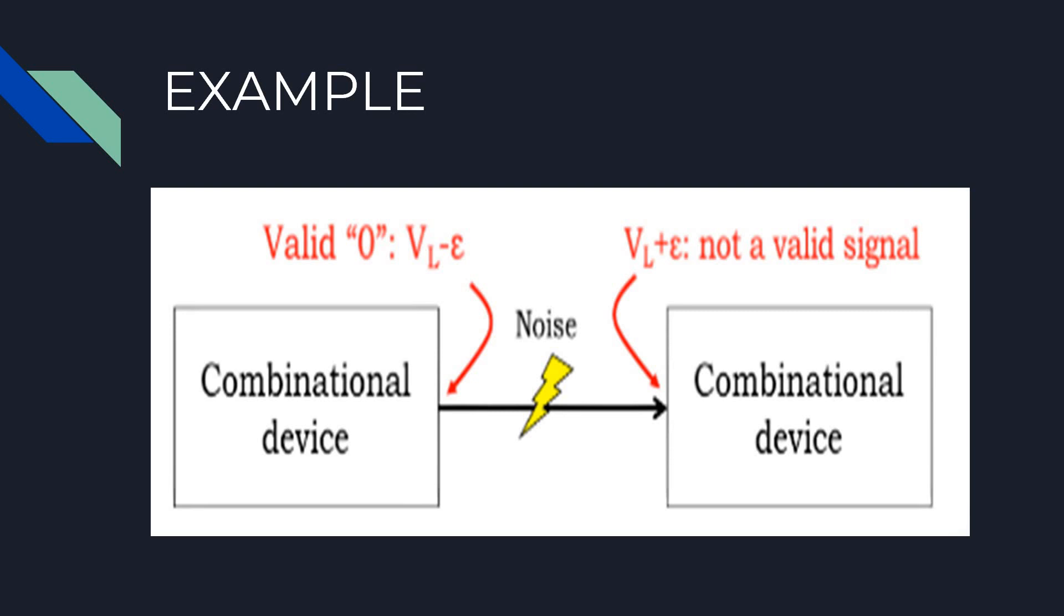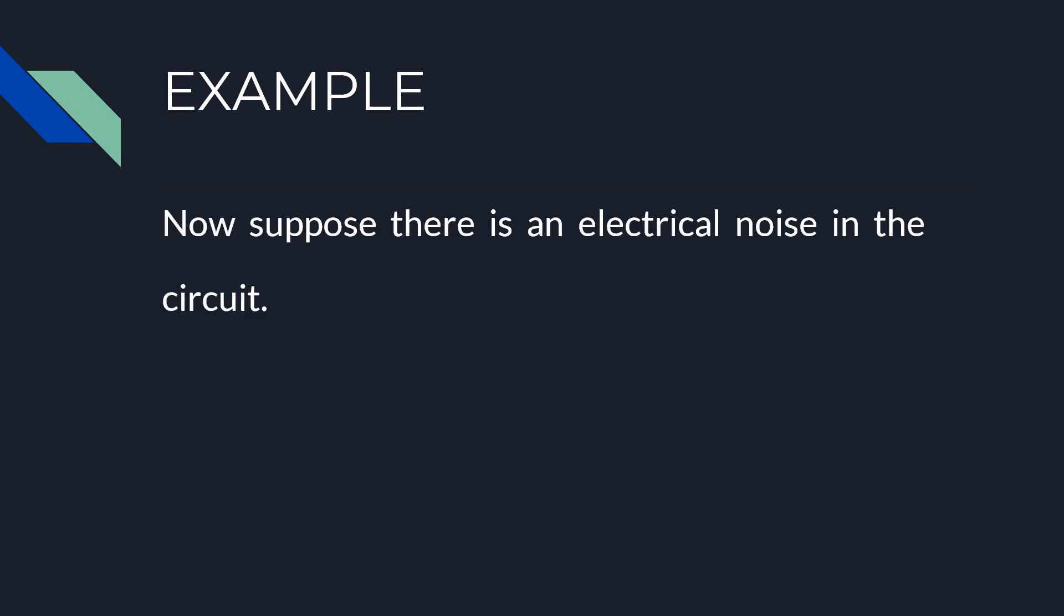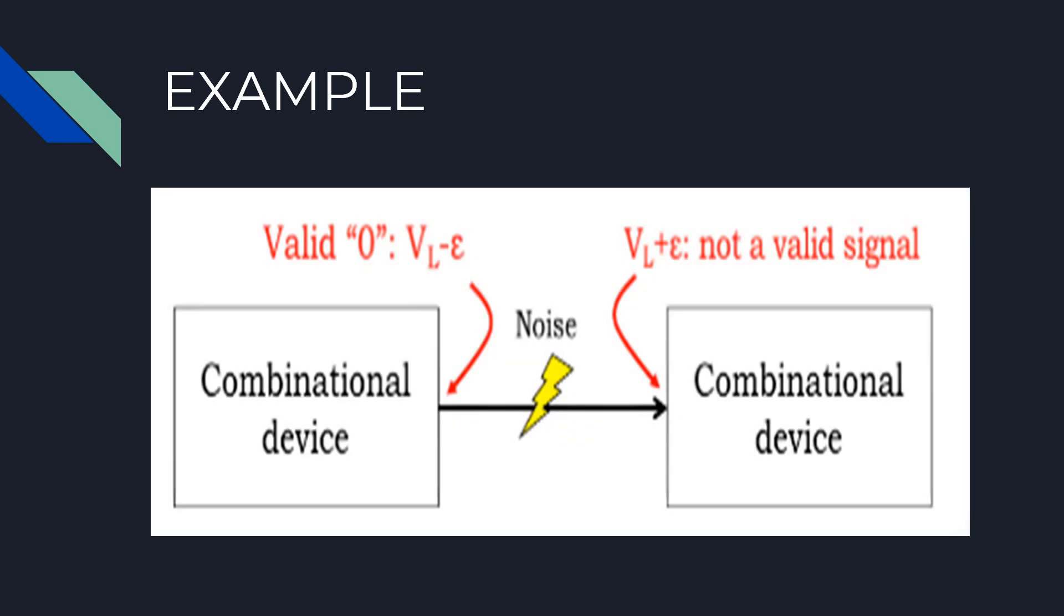Circuit 1 is generating an output voltage slightly below VL which qualifies as logic zero. Now suppose there is electrical noise in the circuit which slightly changes the voltage on the wire so that the voltage detected on the input of circuit 2 is slightly above VL. The change in voltages is due to the noise.